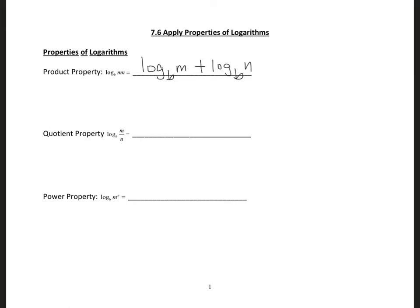The quotient property: logarithm to base b of m over n is going to be logarithm to base b of m minus logarithm to base b of n. Then the power property: logarithm to base b of m raised to n is going to be n times logarithm to base b of m.